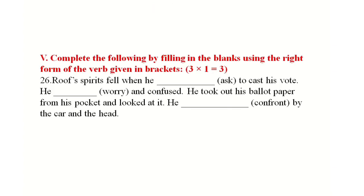Next, complete the following by filling the blanks using the right form of verbs given in the bracket. The passage reads: Rope's spirit fell when dash asked to cast his vote. He dashed — worried and confused. He took out his ballot paper from his pocket and looked at it. He dashed by the car and the head.